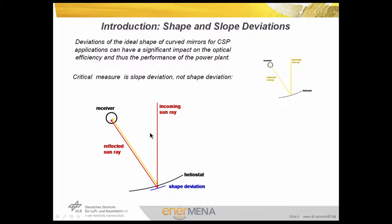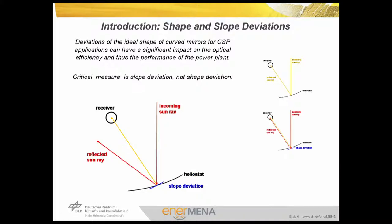So shape deviations don't have a major influence on the optical performance. However, if there is a slope deviation, not the position but the direction of the reflected ray changes. Even small slope deviations can have large influences on the direction of the reflected rays, and depending on the distance from the heliostat to the receiver, the reflected ray may completely miss the receiver.